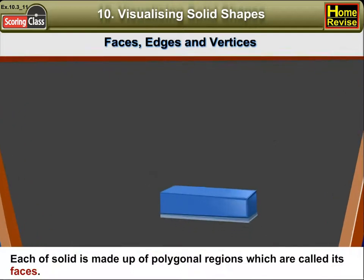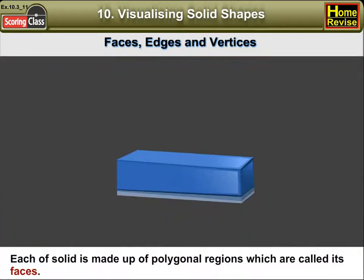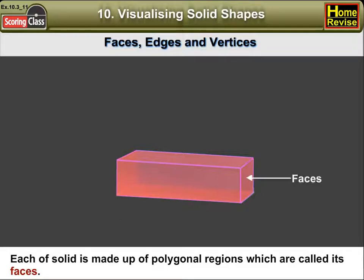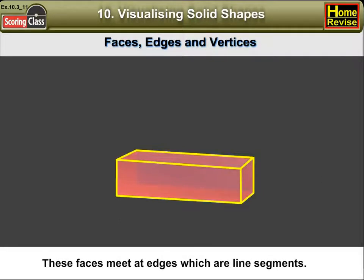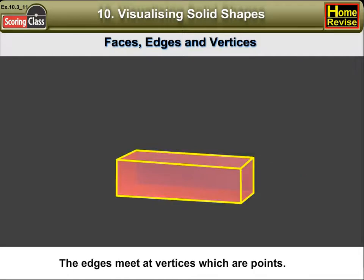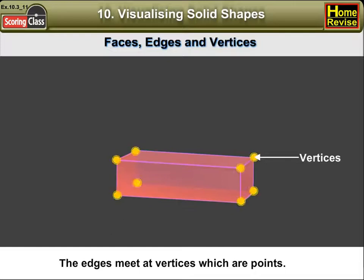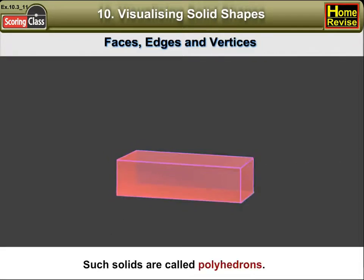Each of these solids is made up of polygonal regions which are called its faces. These faces meet at edges, which are line segments, and the edges meet at vertices, which are points. Such solids are called polyhedrons.